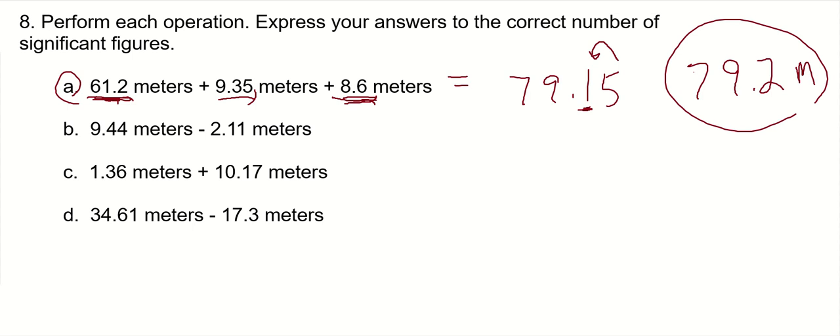Let's move on to B. Now B, they have the same number of digits past the decimal, so they both have precision to the hundredths place.